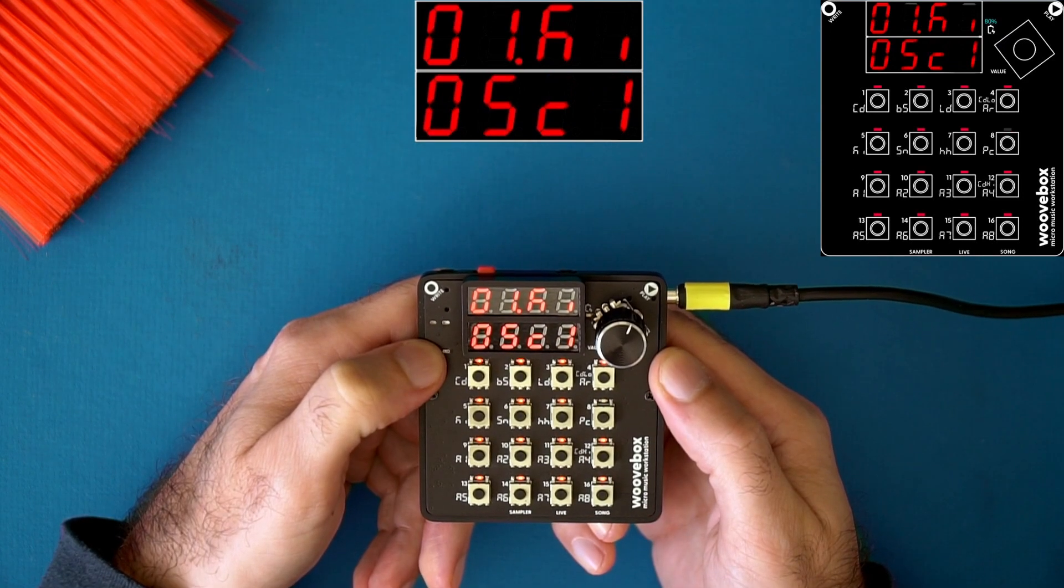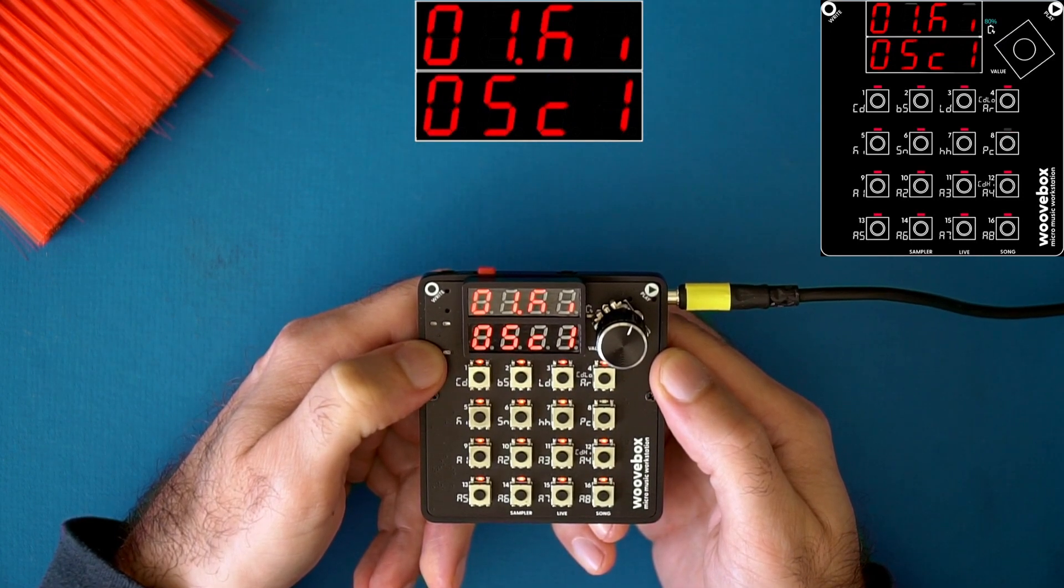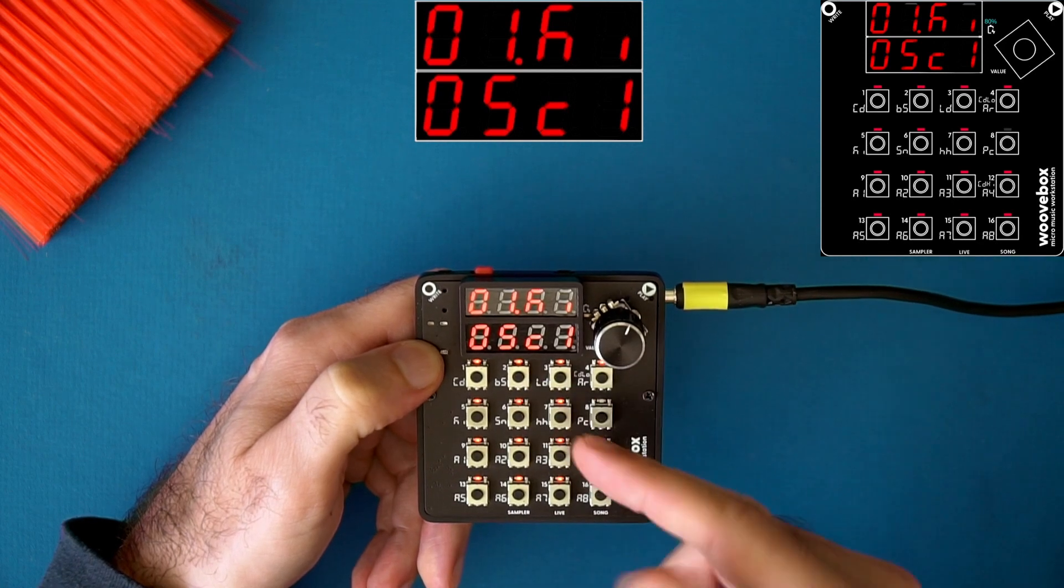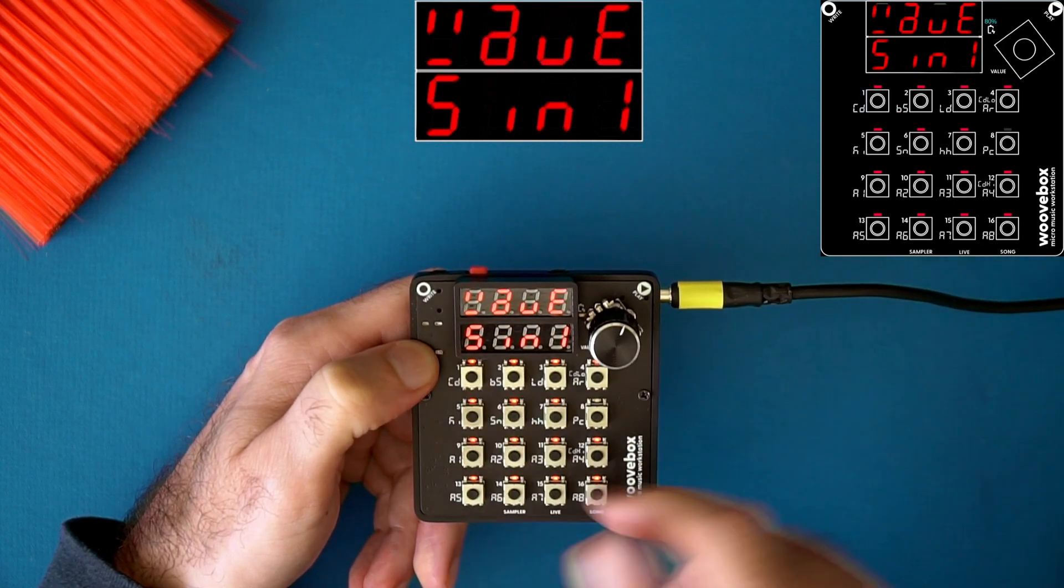Tip number three, you can add steps to the sequencer from any of the sequencer pages. So let's say that I'm on the kick track and I mess around with the oscillator 1 settings, I can still hold right and put some kicks down.